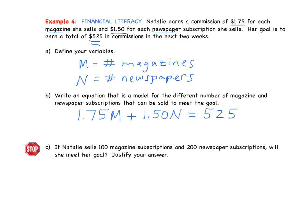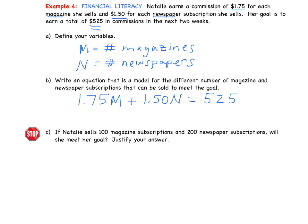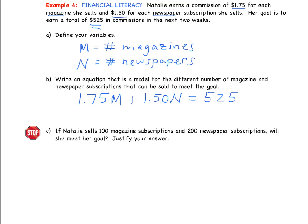For part C, I want you to answer on your own: if Natalie sells 100 magazine subscriptions and 200 newspaper subscriptions, will she meet her goal? Justify your answer with algebra and explain what that means in a sentence. We'll check over the notes tomorrow. Bring any questions to the table as we begin class. Have a good night, everybody. See you later.